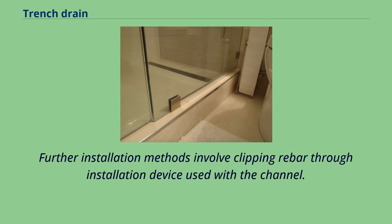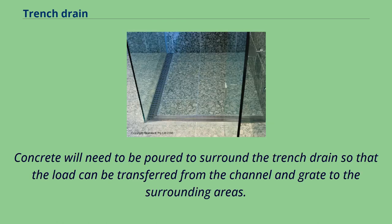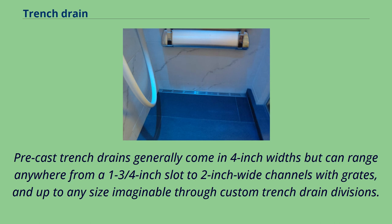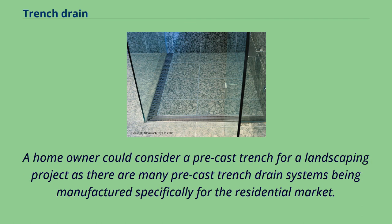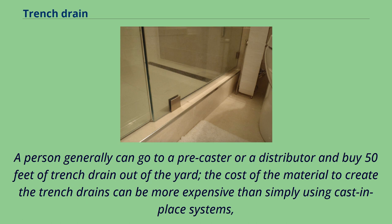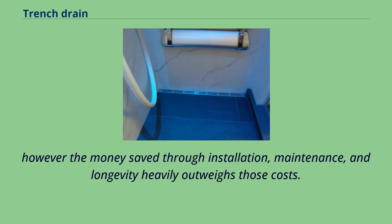Further installation methods involve clipping rebar through an installation device used with the channel. Concrete must be poured to surround the trench drain so that the load can be transferred from the channel and grate to the surrounding areas. Precast trench drains generally come in 4-inch widths but can range from a 1¾-inch slot to 2-inch wide channels with grates, and up to any size through custom divisions. A homeowner could consider a precast trench for a landscaping project, as many precast systems are manufactured for the residential market. The cost of material can be more expensive than cast-in-place systems; however, the money saved through installation, maintenance, and longevity heavily outweighs those costs.